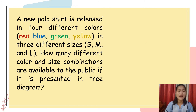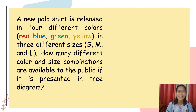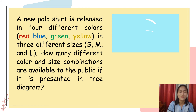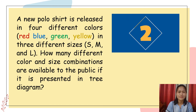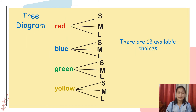Let's have another problem. A new polo shirt is released in four different colors — red, blue, green, yellow — in three different sizes — small, medium, and large. How many different color and size combinations are available to the public if presented in tree diagrams? I'll give you 10 seconds. Time's up — let's see if you got the correct answer. Do you have the same answer with the given illustration? Good job, grade 8 learners, keep it up!